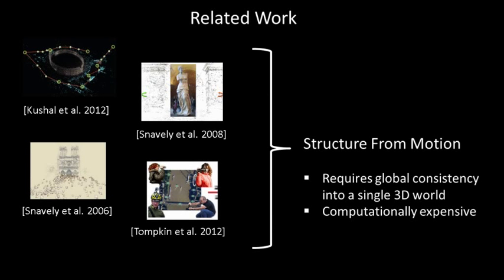Today's tools that address spatiotemporal organization of images mostly rely on structure from motion. However, structure from motion aims at having everything globally consistent into a single 3D world, which is very brittle and might break in some cases.